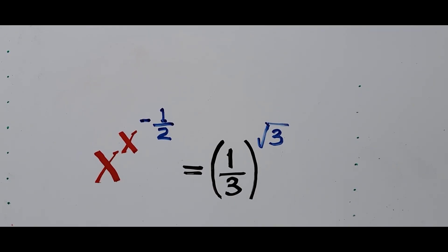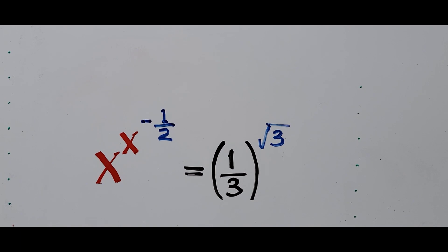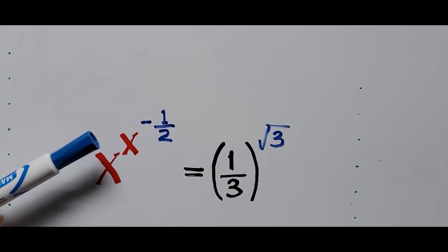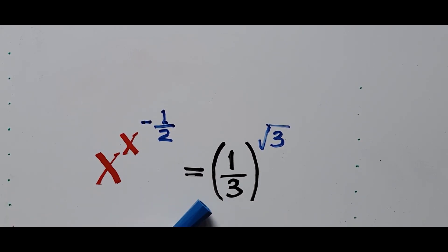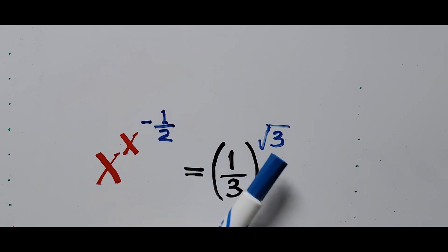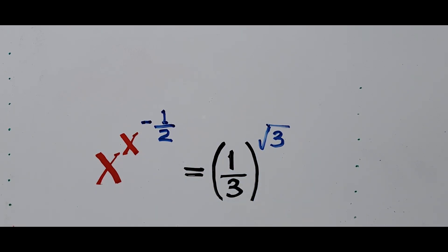Hello everyone, we have here exponential equations to solve on the board: x to the power of x to the power of negative 1 half equals 1 third raised to the power of square root of 3, and we're looking for the value of x. For those new to my channel, please don't forget to like and subscribe for more videos — I will appreciate it, thank you.